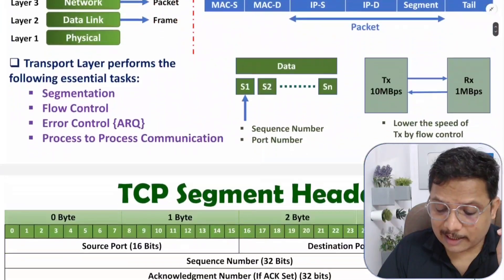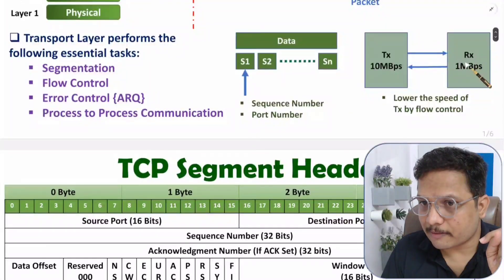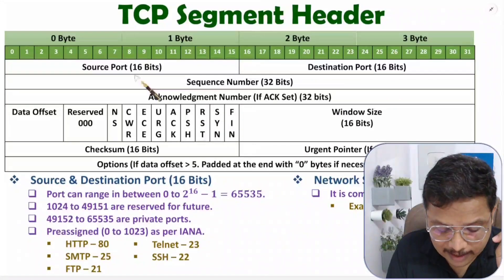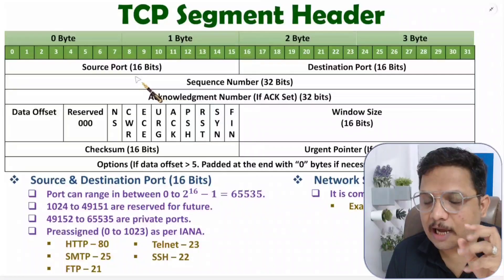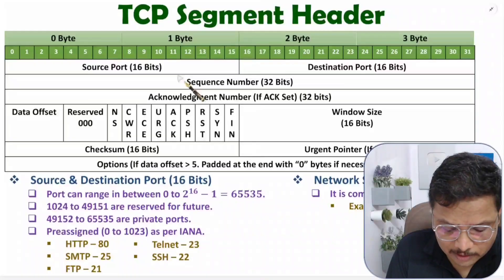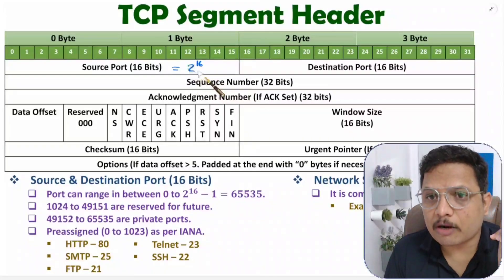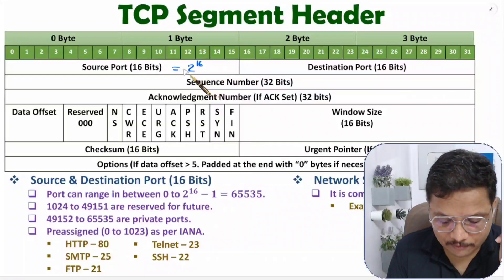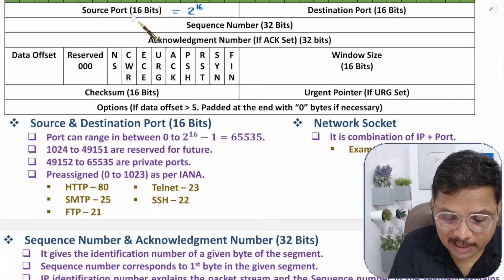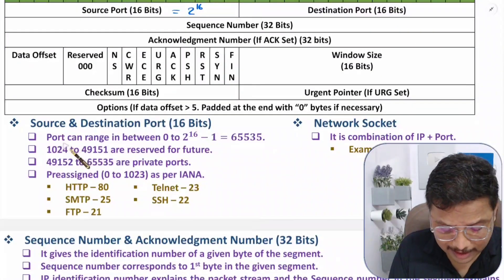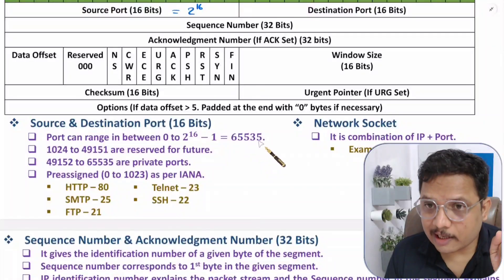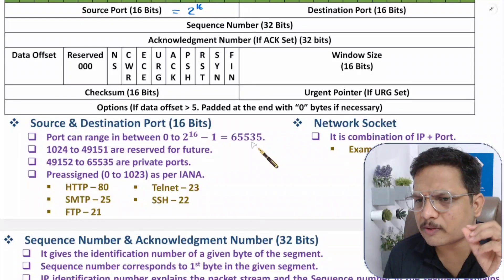Source port and destination port are there for transmitter and receiver. The size of source port and destination port is 16 bits. Based on 16 bits, 2 to the power 16 port numbers are available. So the port range is from 0 to 2 to the power 16 minus 1, which is 0 to 65535. With each process there will be one port number to access the computer network.